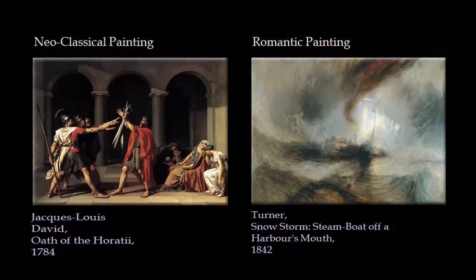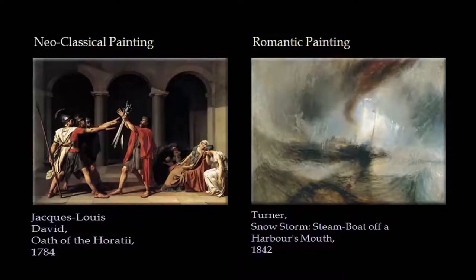Look at this comparison between a Neoclassical painting by David and the Romantic painting by Turner. Clearly the Neoclassical painting reveals all kinds of characters with precision, accuracy, and clarity of forms — distance, perspective, figure-to-figure relationships — whereas Turner's paintings simply reject all these classical norms and innovate a new method and approach to painting altogether.